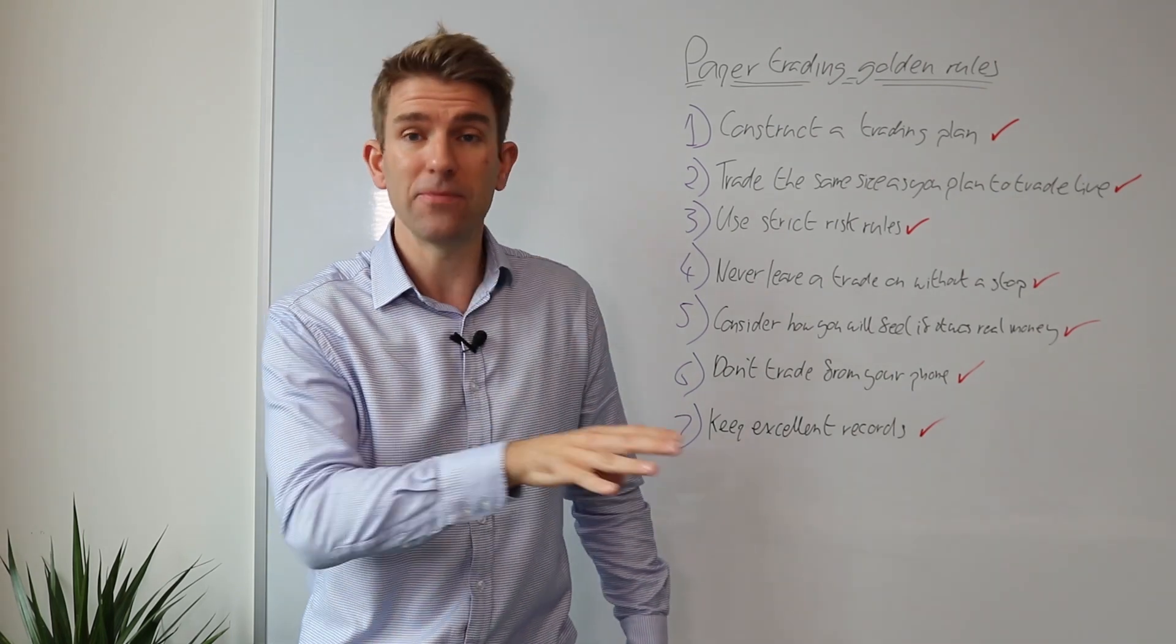Trade the same size as you'd trade live. Use strict risk rules. Similar type of thing, but this is basically saying, okay, where am I going to come out of the trade if I'm wrong? So a stop loss order. Where am I going to, when am I going to stop trading if I've made multiple losses in a row and reevaluate? Again, consider it as if it was live and treat it like a business.